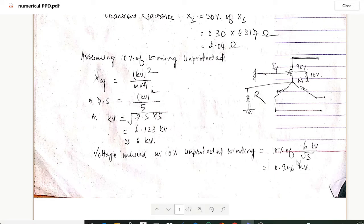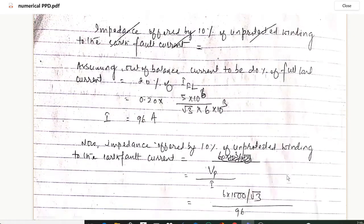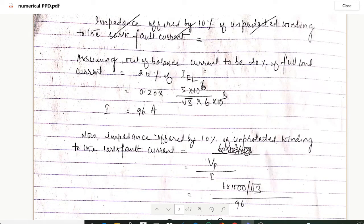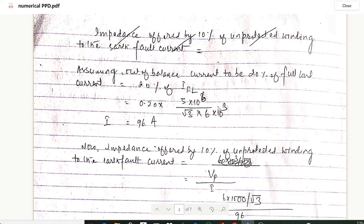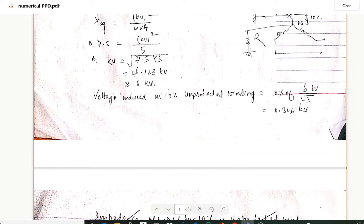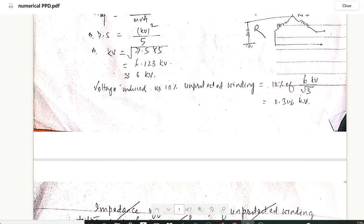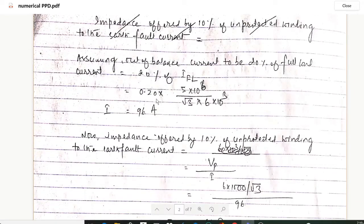Now assuming out of balance current to be 20 percentage of full load current, it will be 0.20 into full load. In order to calculate the full load we have 5 MVA given, so 5 MVA means 5 into 10 to the power 6 upon root 3 into 6 kV. 0.20 into 5 into 10 to the power 6 upon root 3 into 6 into 10 to the power 3. So we will get the value of out of balance current, so value of I will be 96 amperes.